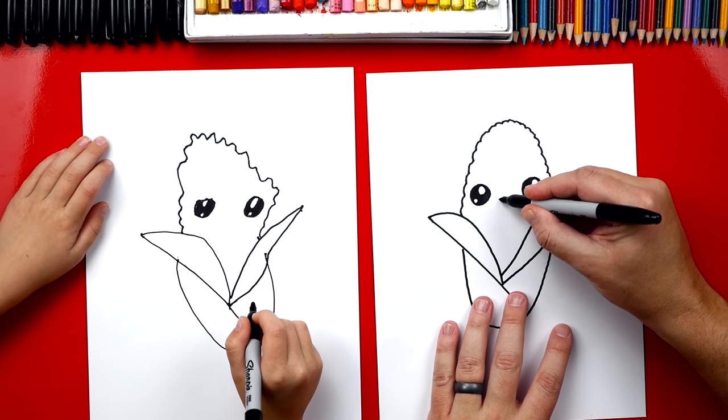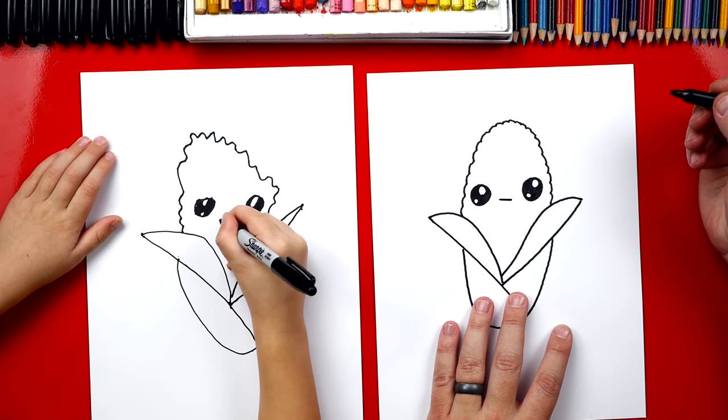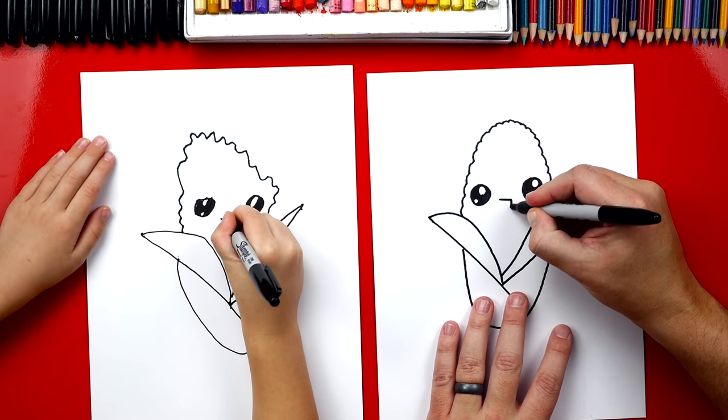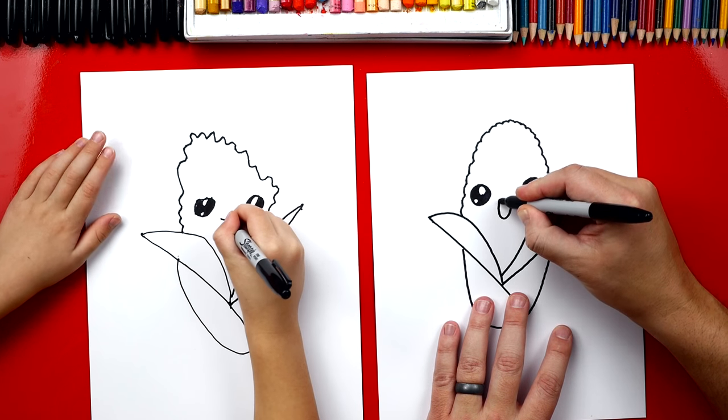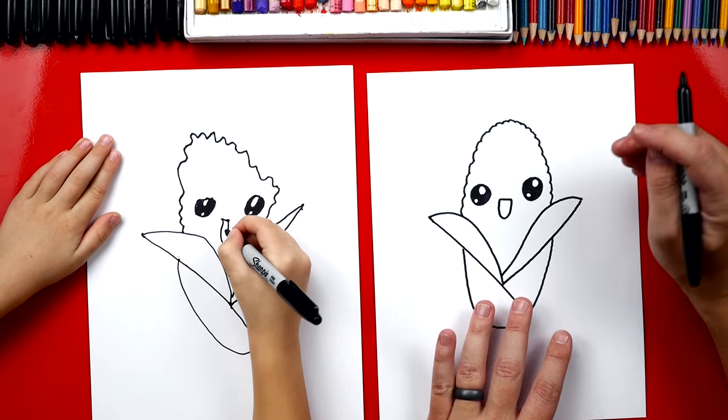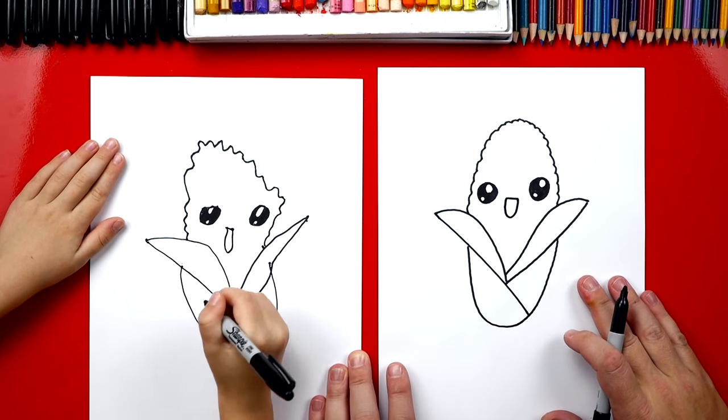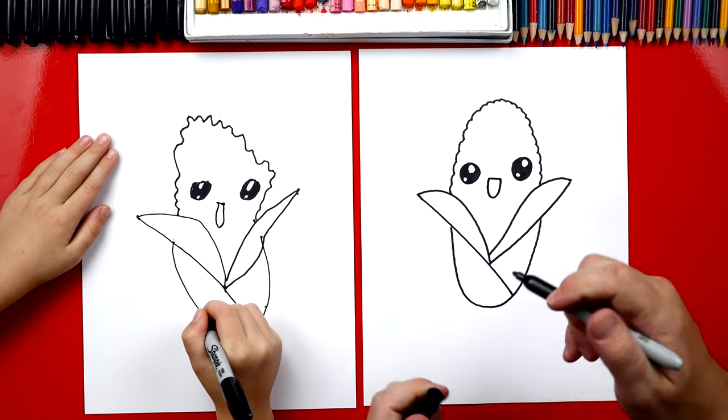Now we need to draw the mouth. And I'm just going to draw a little line right in between, straight line. And then I'm going to draw a big U underneath. And we finished drawing our corn, dude. You did a great job, except we still need to do one last thing.